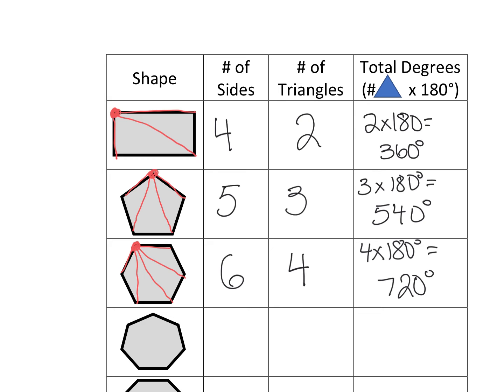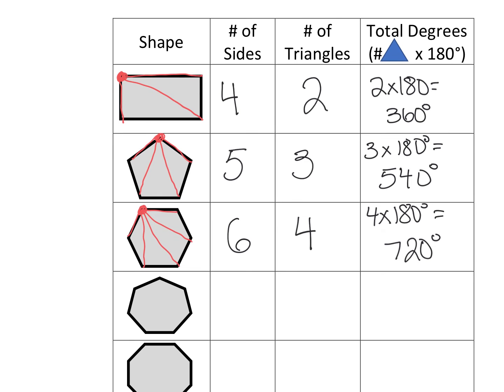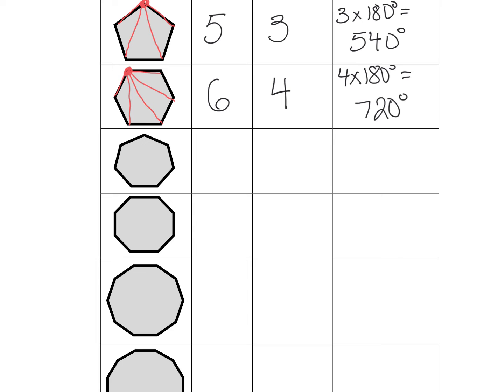All right, hopefully you went ahead and paused the video and tried the next ones out. So if we keep going here, our next one has seven sides. So as we start to draw out our triangles, you should be noticing a pattern here, and math is that investigation of patterns. Five times 180, we end up with 900 degrees.